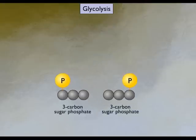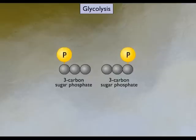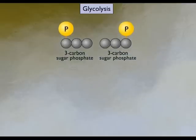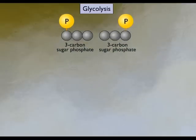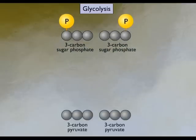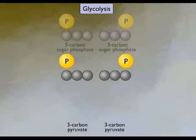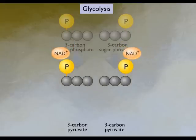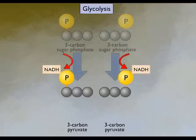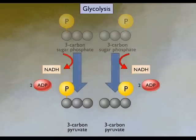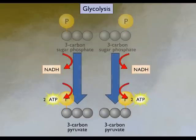Each of the three-carbon molecules is converted through a series of steps to pyruvate. During these reactions, electrons are transferred to the coenzyme NAD+ to form NADH, and ATP is formed.